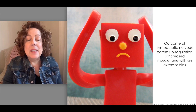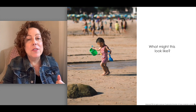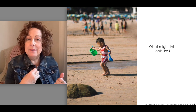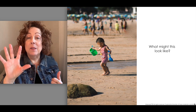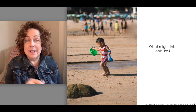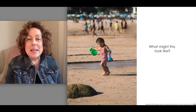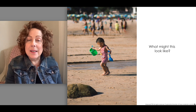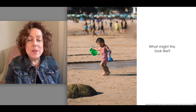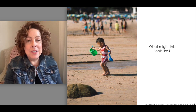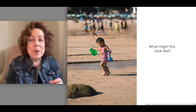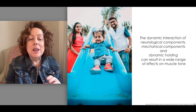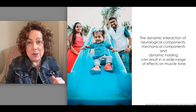What does that look like when we look at our kids? It often looks like an upper chest breath pattern or breath holding. It looks like a rib cage that's pitched up, with thoracic extension and overlong abdominals. Sometimes there will be a pelvis that's tucked under, and sometimes it looks like toe walking. In all of those instances, there is an increase in extensor bias. It's the dynamic interaction of the neurological components that can result in a wide range of effects on muscle tone.